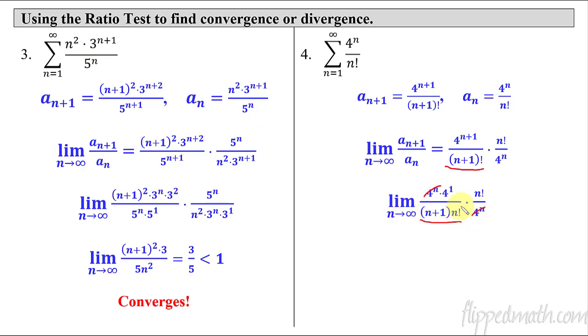Now I can start canceling stuff. So 4^n cancels, n factorial cancels. And that's really nice. I'm just left with 4 over (n+1). So I have the limit of this thing. That limit is going to equal 0. Since 0 is less than 1, this whole series converges.